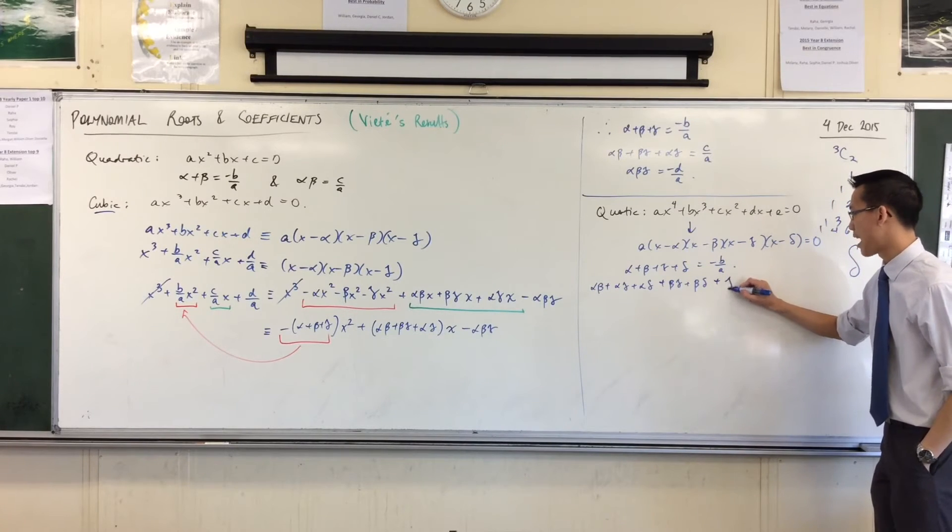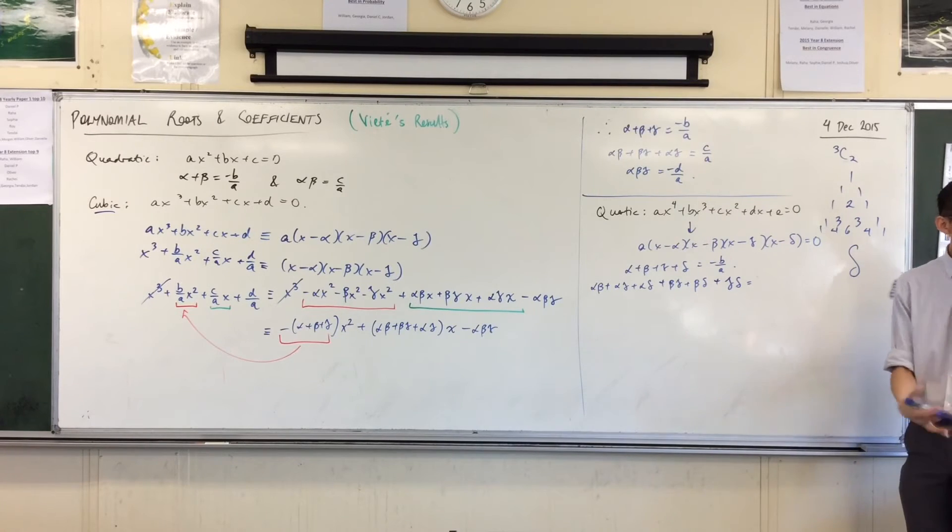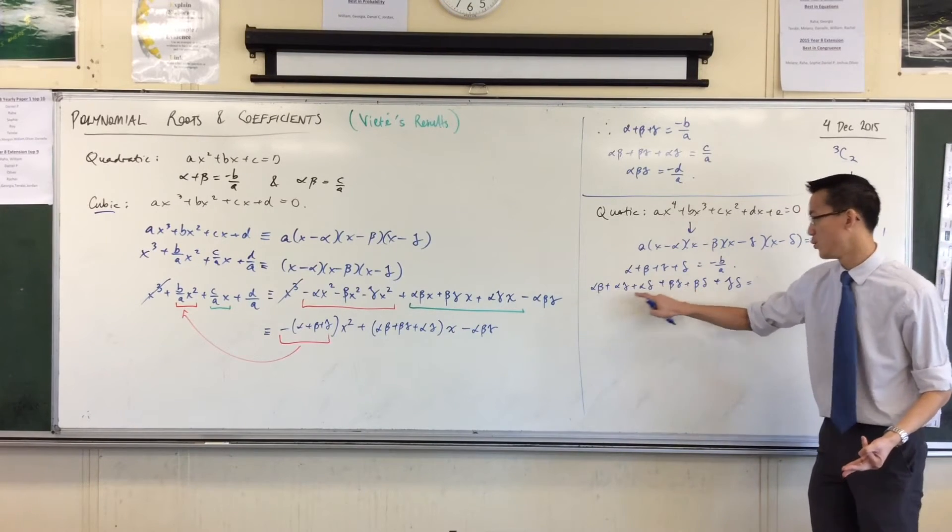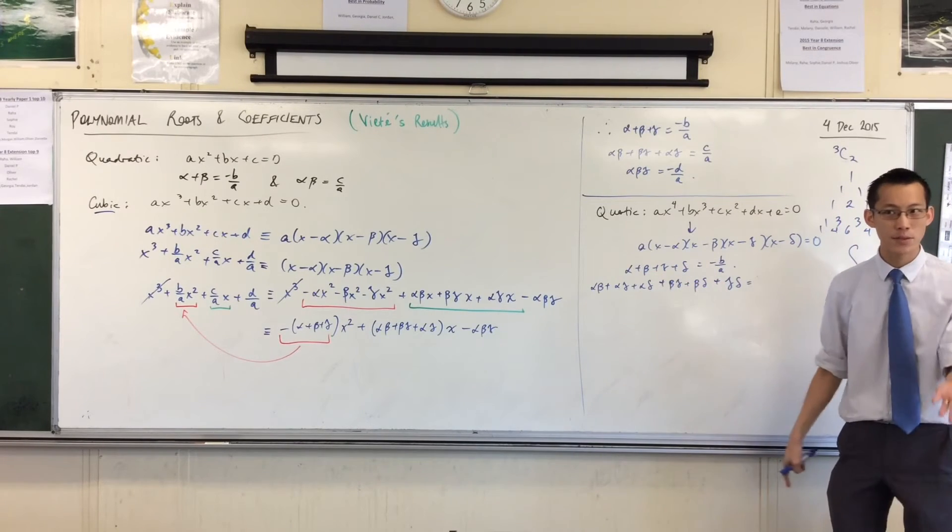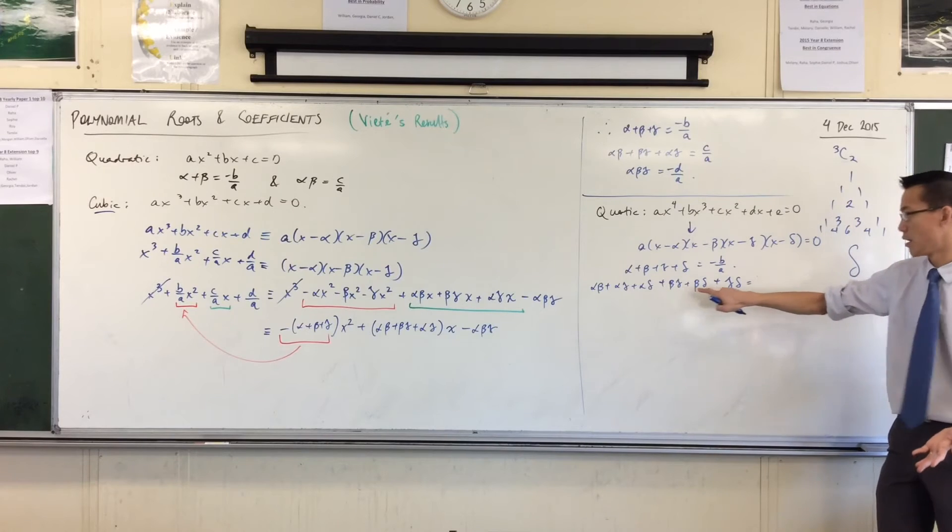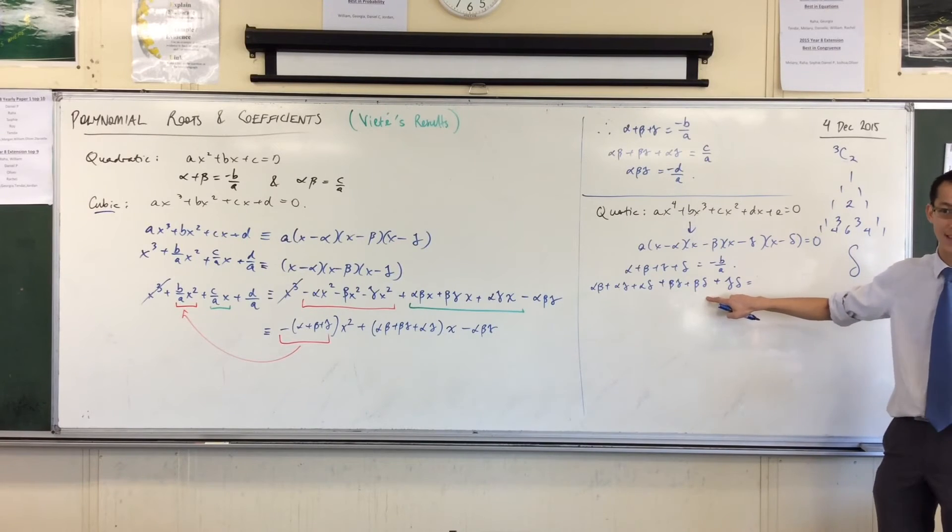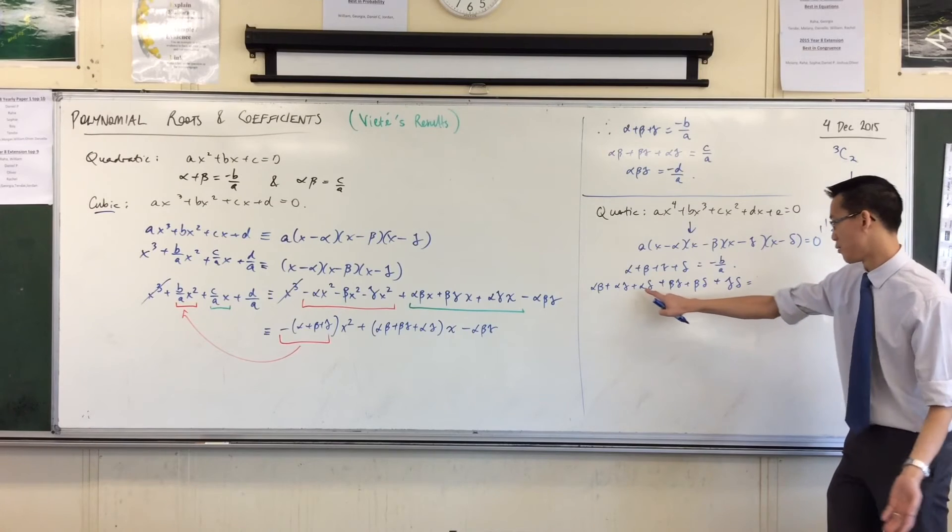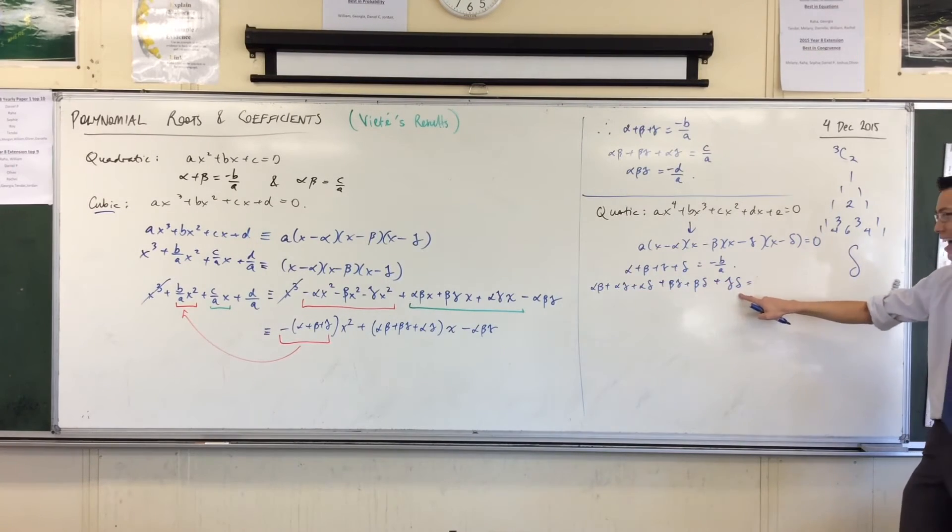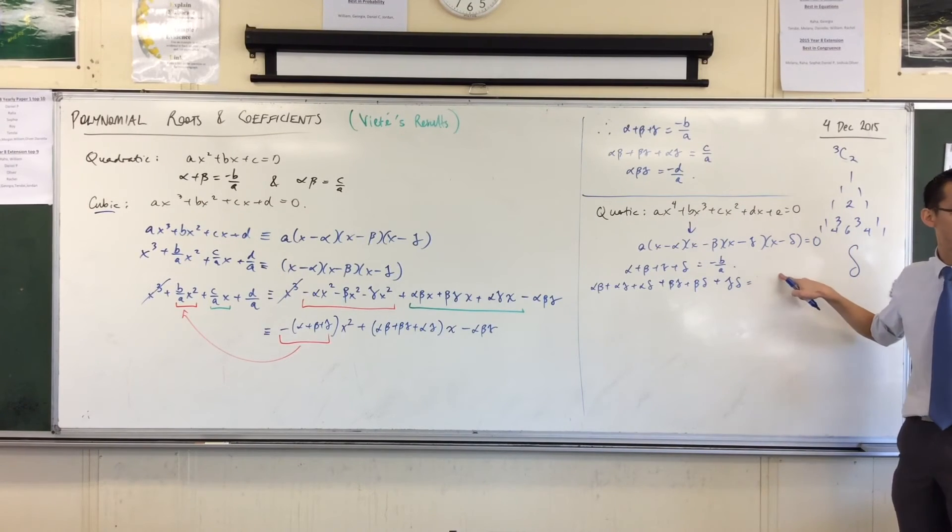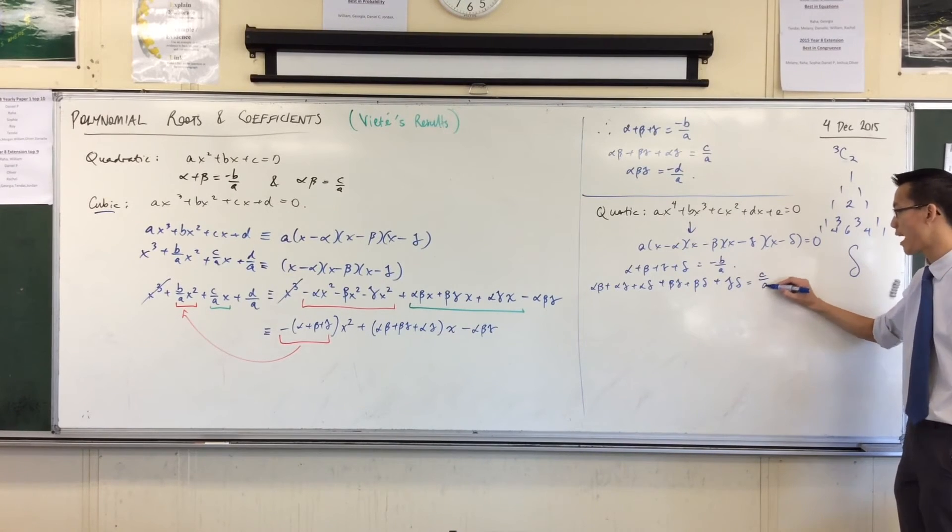Another way that I can know is you look at how many times you've used each of the roots. How many times have I used alpha? One, two, three times. You can only use it three times, because it only has three other things to pair up with. How many times have you used beta? One, two, three times, because there are only three other things you can pair up with. How many times do you use gamma? One, two, three. And you can see, I don't need to do delta for you. I've got three as well. Now again, the coefficients are going to go to the next one, and the sign is going to alternate.